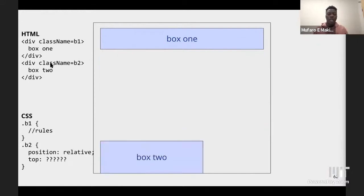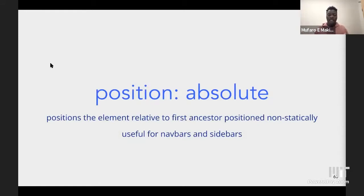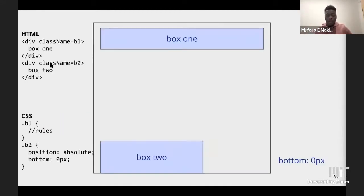Suppose you want box 2 to appear at the bottom of its outer container. You could try adjusting the top value, but this will break with different container sizes. The way to achieve this is using position absolute, which positions the element relative to the first non-statically positioned ancestor. This is useful for navbars or sidebars. You set position absolute on B2 and bottom to zero pixels, ensuring box 2 stays at the bottom of the container.